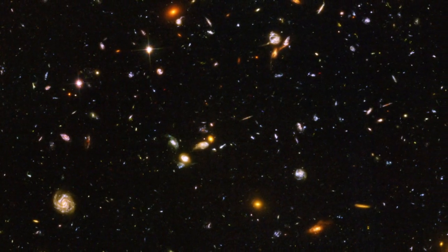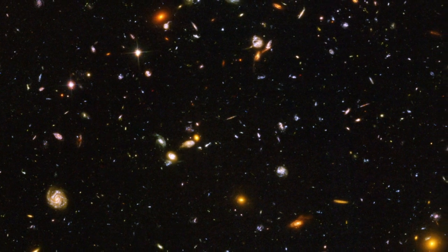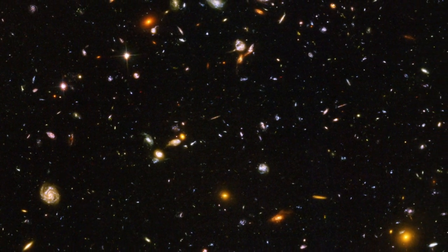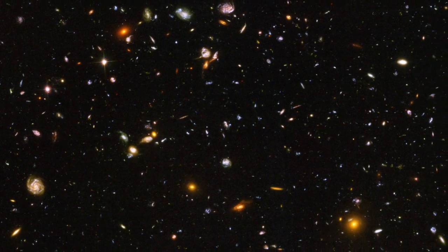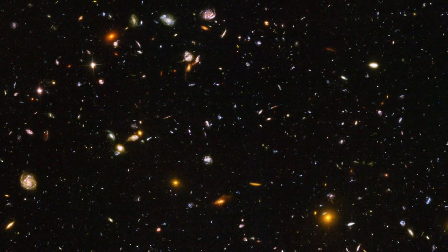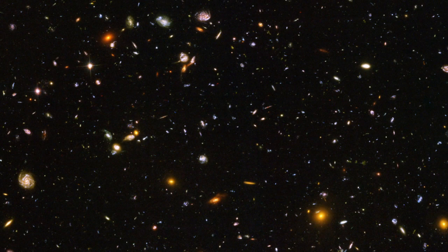The image was called the Ultra Deep Field, and that changed everything. We saw things that were much farther away than any previous observations had shown us. You're looking back when the universe was less than a million years old, and be able to find objects that existed at that time.